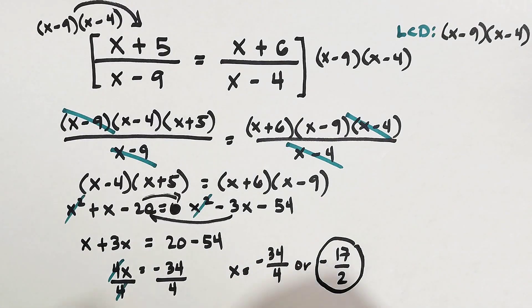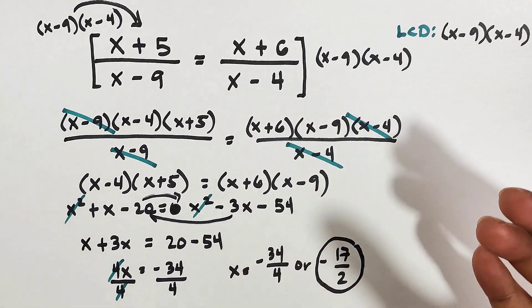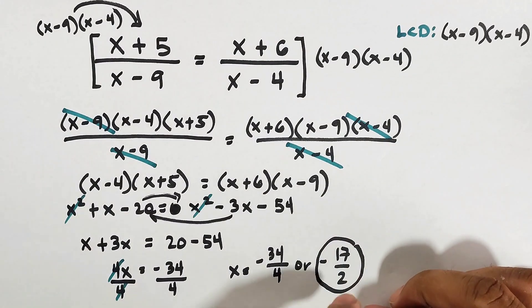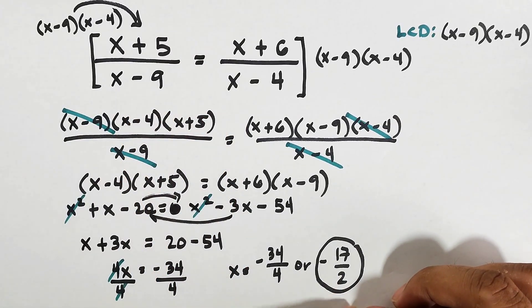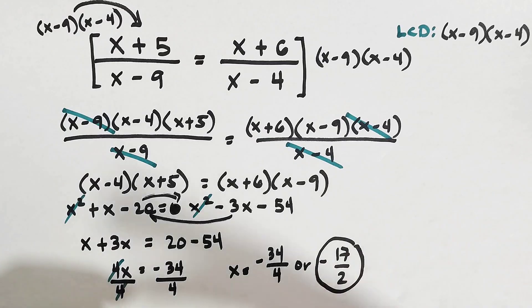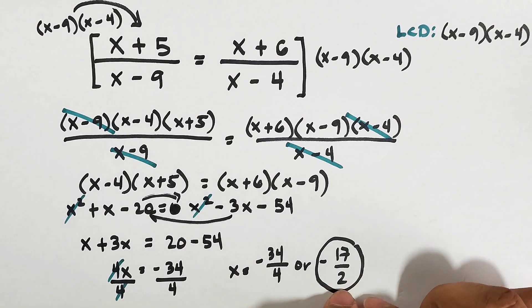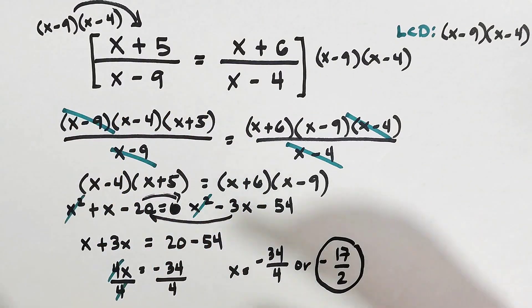Now let's check if this will be an extraneous root. When it comes to rational equations, you need to be mindful if the value of x is an extraneous root. When we substitute x with negative 17 over 2 in the original denominators, it should not become 0. In this case, when you substitute negative 17 over 2, it doesn't become an extraneous root. Now, let's continue with another item.